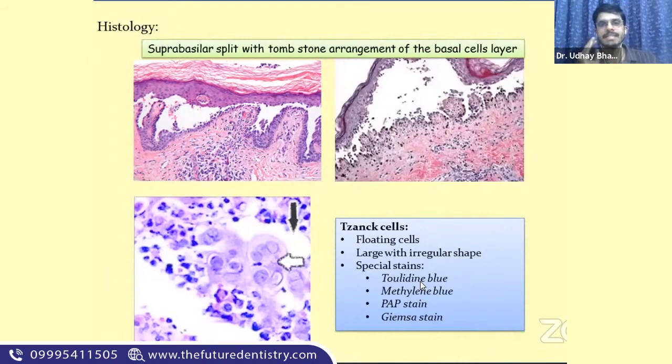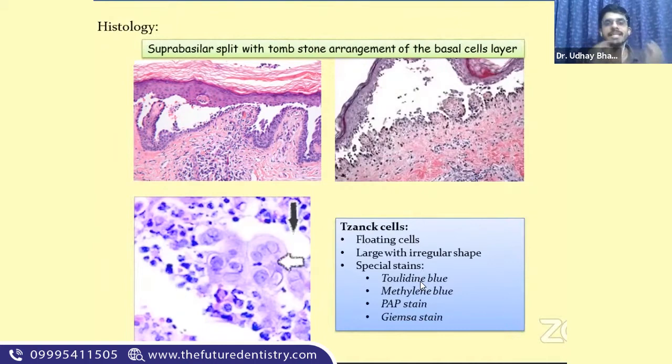Importantly, Tzanck cells are not pathognomonic of pemphigus — they are seen in a wide array of vesiculobullous lesions. Any lesion with a blister or discontinuity of the surface epithelium can show cells resembling Tzanck cells. For example, herpetic lesions, chickenpox, and even some conditions of pemphigoid can present with Tzanck cells. They are suggestive of, but not exclusively diagnostic of, pemphigus.